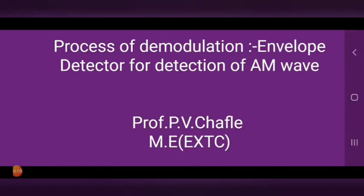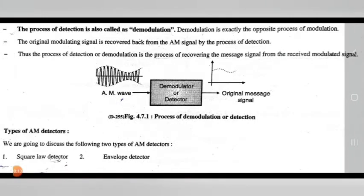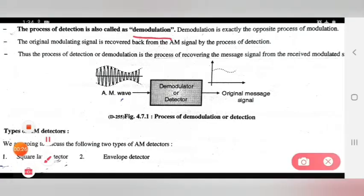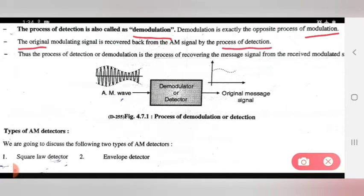The process of detection is also called demodulation. Demodulation is exactly the opposite process of modulation. The original modulating signal is recovered back from the AM signal by the process of detection. The process of detection or demodulation is the process of recovering the message signal from a received modulated signal.